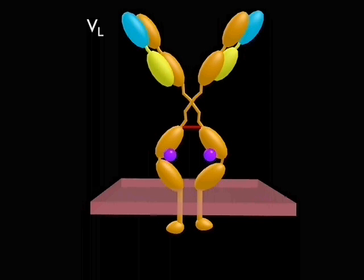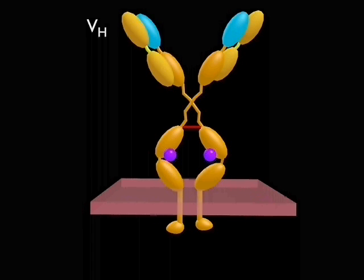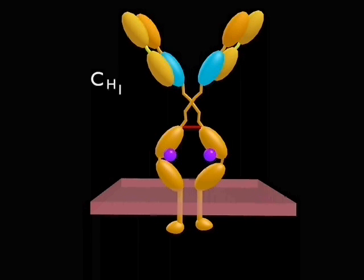Antibodies are folded into domains, which are named according to whether they are variable, V, or constant, C, and according to whether they belong to the light chain, L, or heavy chain, H.